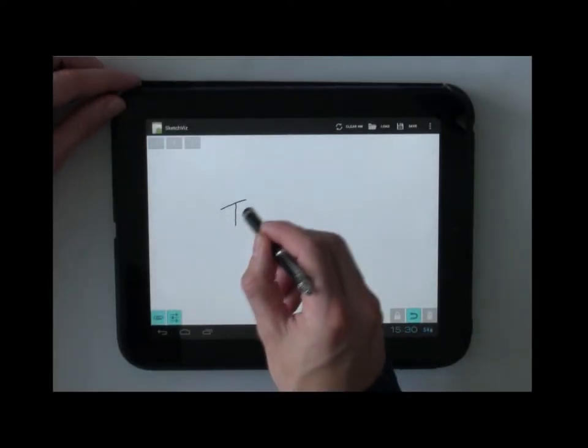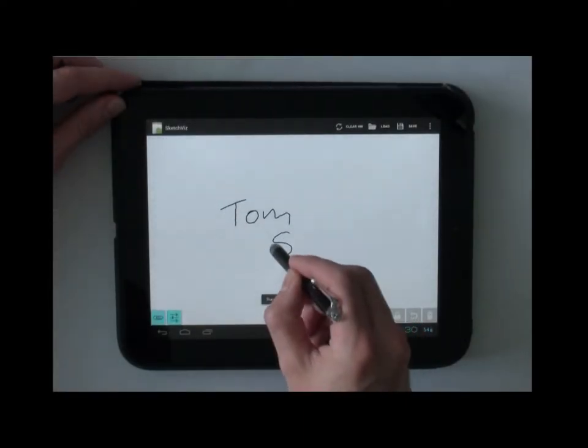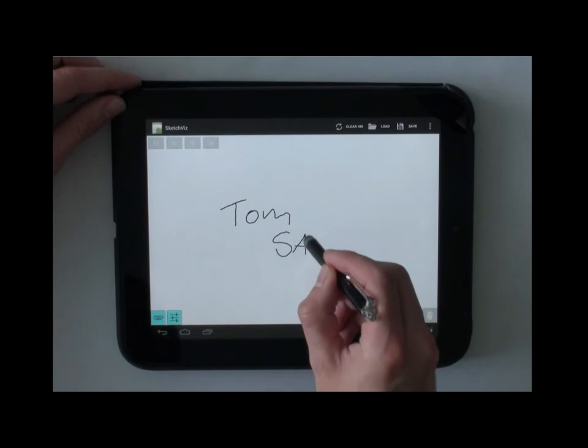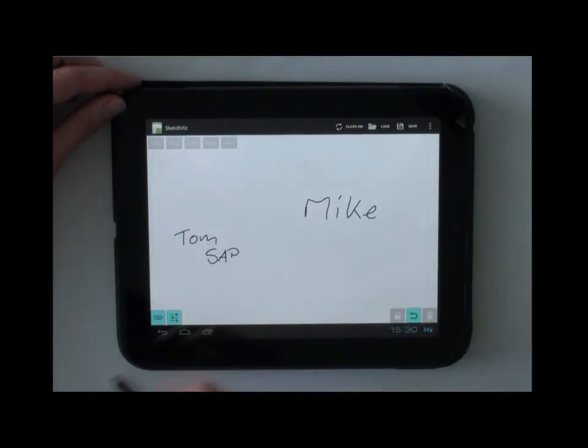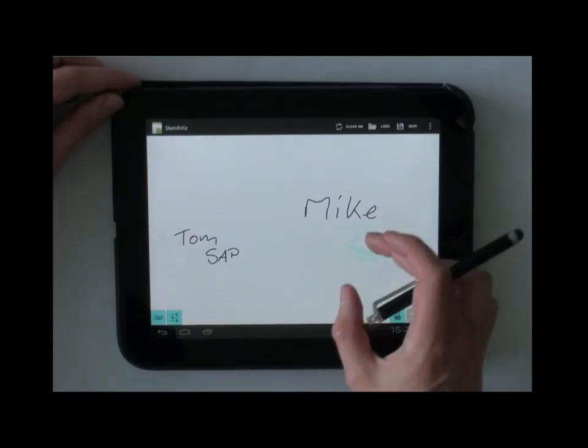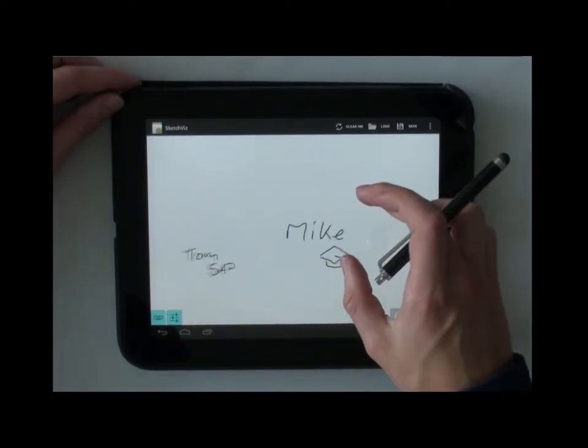In our use case, the user is at an exhibition. Being there, he meets Tom. Tom is an employee at SAP. The next person he is talking to is Mike. Mike works at a university in the field of visual thinking.